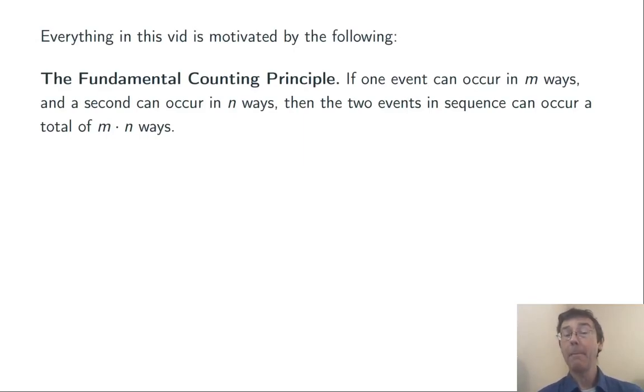If one event can occur in m ways, and the second event can occur in n ways, then the two events in sequence can occur in a total of m times n ways. An important point here is that the outcome for the first event does not affect the number of outcomes possible for the second event.